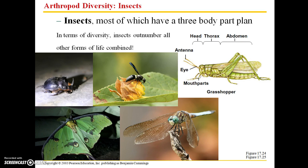Insects have a three-part body plan: a head, a thorax, and an abdomen. They are generally quite distinguishable, with pretty obvious lines between the segments. In terms of diversity, insects outnumber all other forms of life combined, so there have been an incredible number of insects identified.